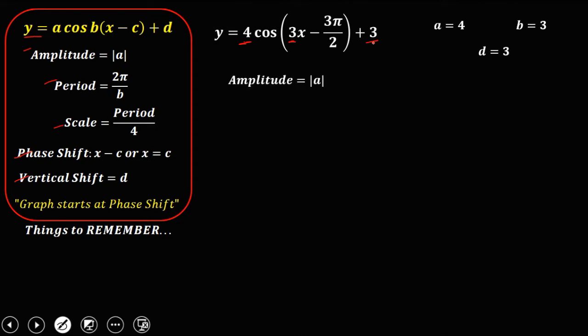To get the amplitude, that's the absolute value of a, or the absolute value of 4, so therefore the amplitude is positive 4.